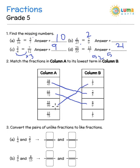You could do the two-step method or the direct method. And 15 by 75 — we know that 15 into 5 is 75, so it is 1 by 5.